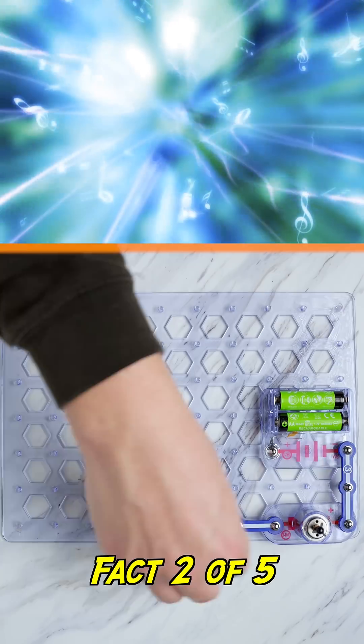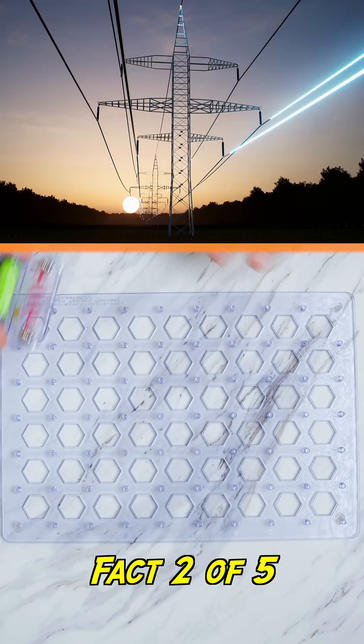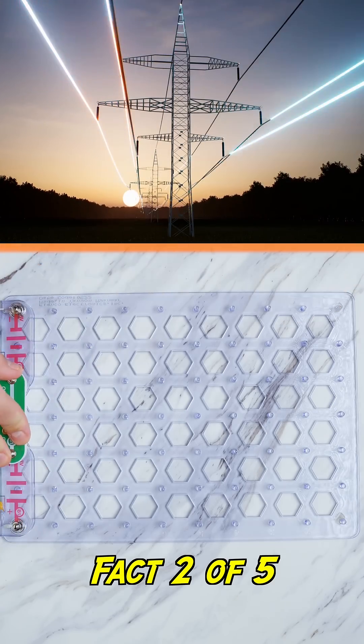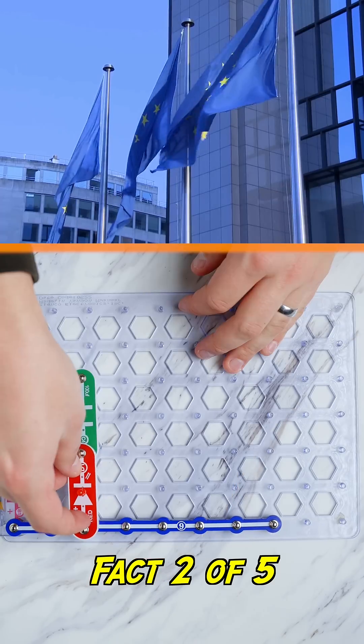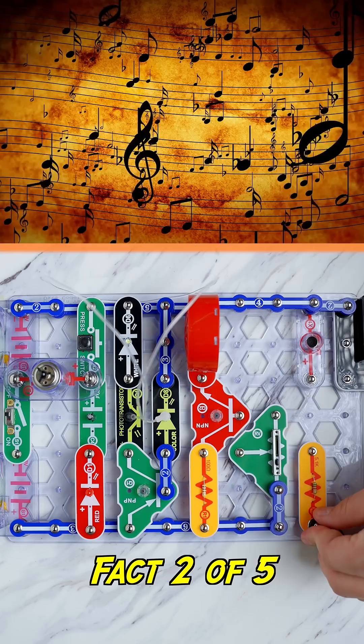Electricity sounds different in different countries. In the US, electricity hums at 120 hertz, or between a B and B-flat two octaves below middle C. But in Europe, it hums at 100 hertz, or between an A-flat and G two octaves below middle C.